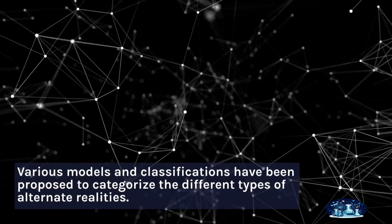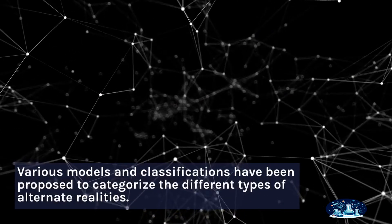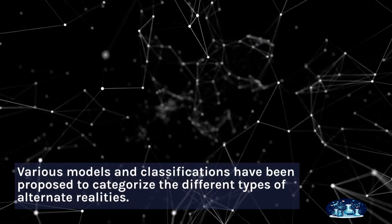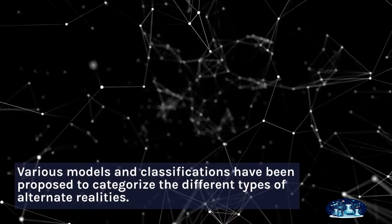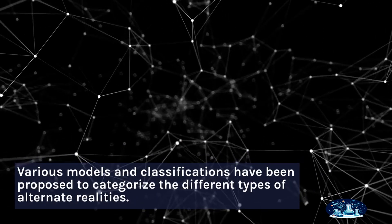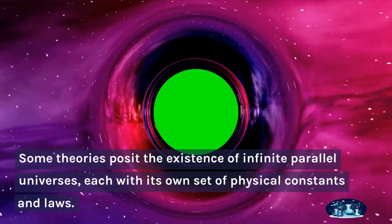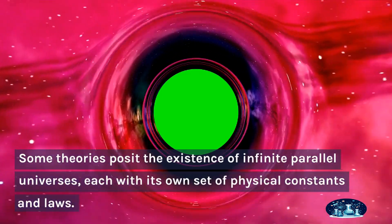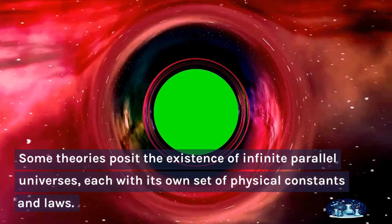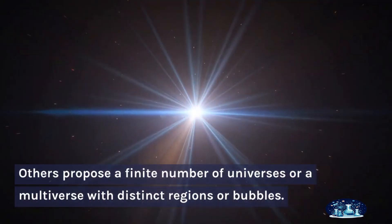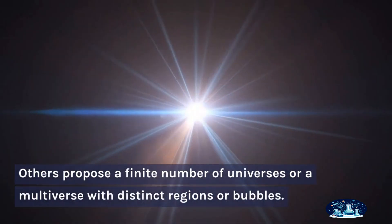Types of alternate realities: Various models and classifications have been proposed to categorize the different types of alternate realities. Some theories posit the existence of infinite parallel universes, each with its own set of physical constants and laws. Others propose a finite number of universes or a multiverse with distinct regions or bubbles.